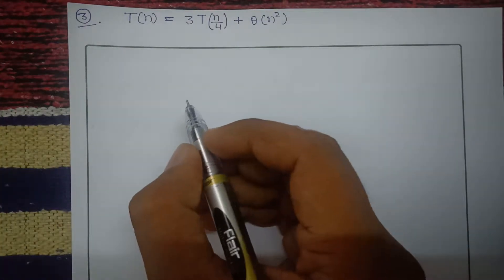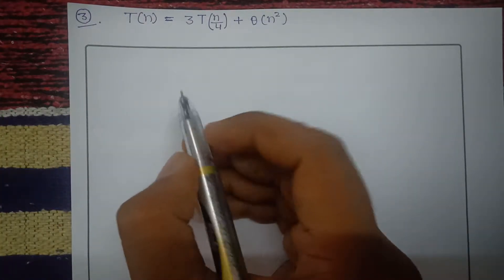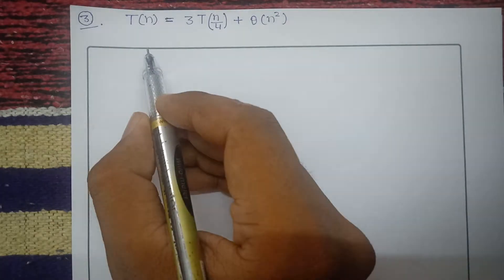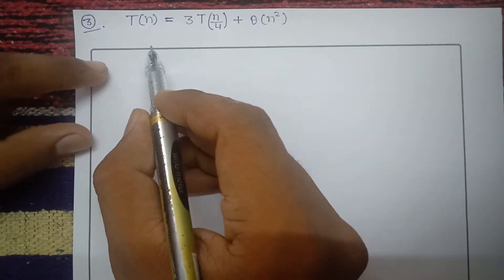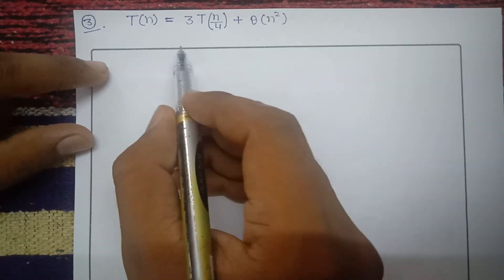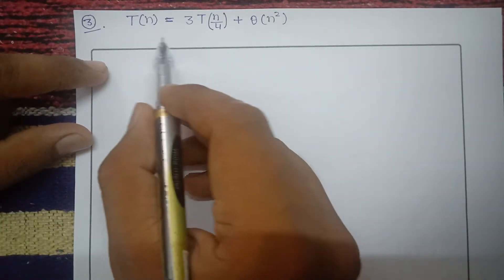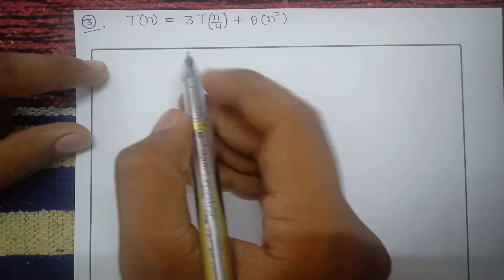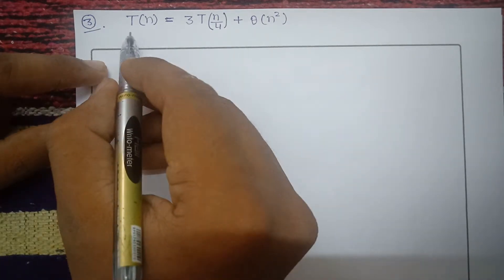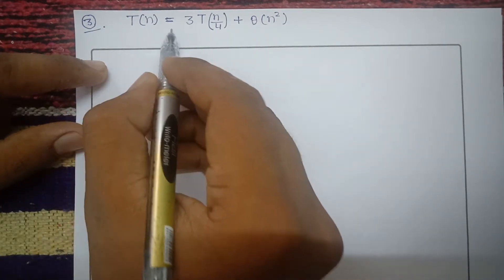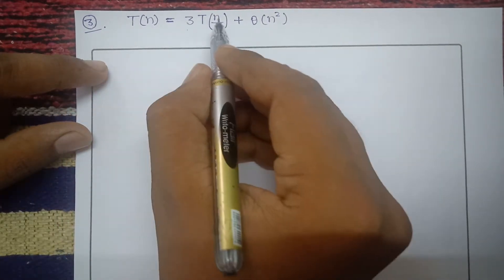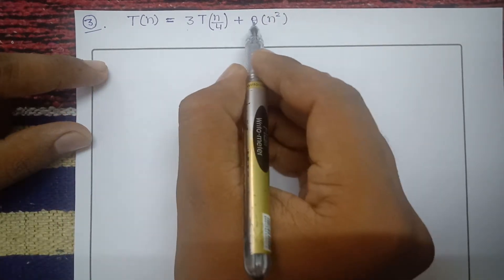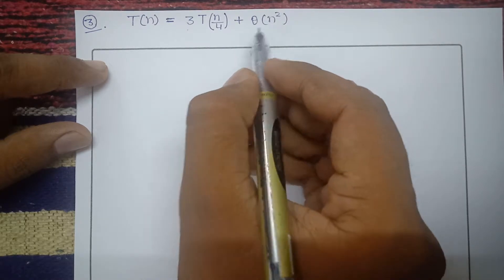Hello friends. In this video we will solve a problem to analyze the time complexity for a recursive function. The recurrence relation is T(n) = 3T(n/4) + Θ(n²).